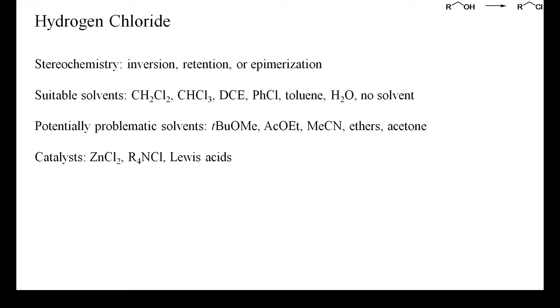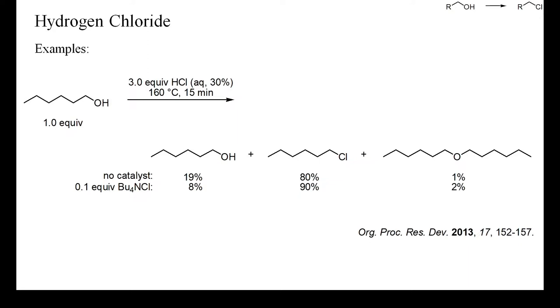This example, conducted continuously, shows how tetrabutylammonium chloride, acting both as phase transfer catalyst and as chloride source, can enhance the reaction rate of deoxychlorinations with aqueous hydrogen chloride. Interestingly, despite the high tendency of primary carbocations to isomerize to secondary carbocations, no secondary alkyl chlorides or ethers were formed in this instance.